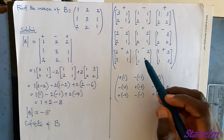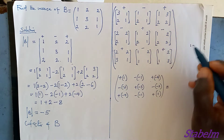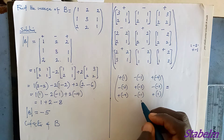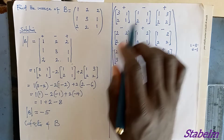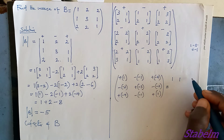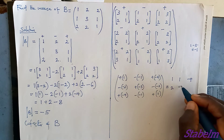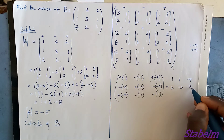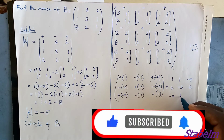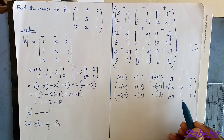Let me clarify how we obtained the value minus 1: 1×1 − 1×2 = 1 − 2 = −1. Applying this method across all entries, the complete cofactor matrix of B is [1, 1, −4; 2, −3, 2; −4, 1, 1].